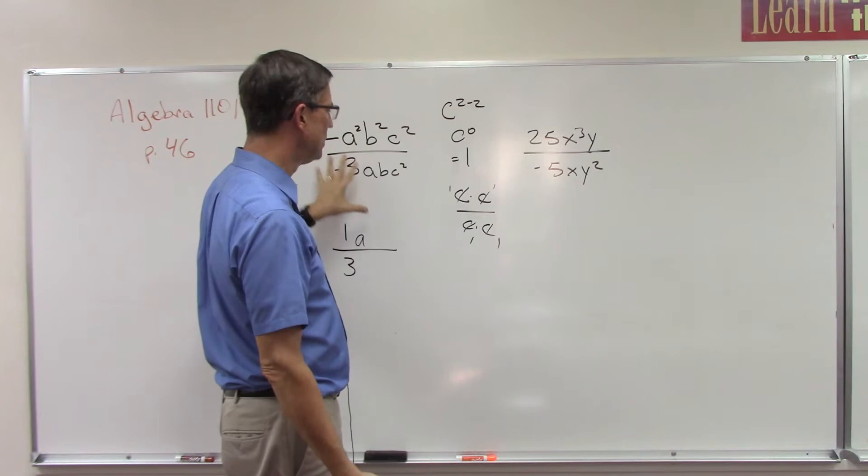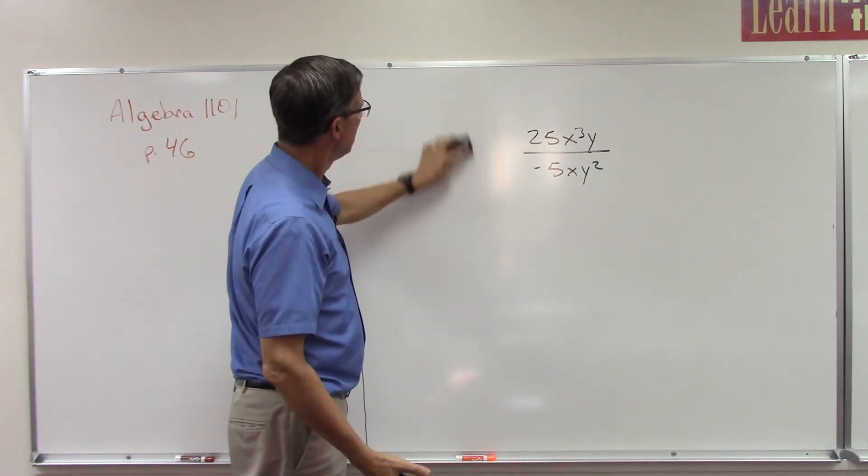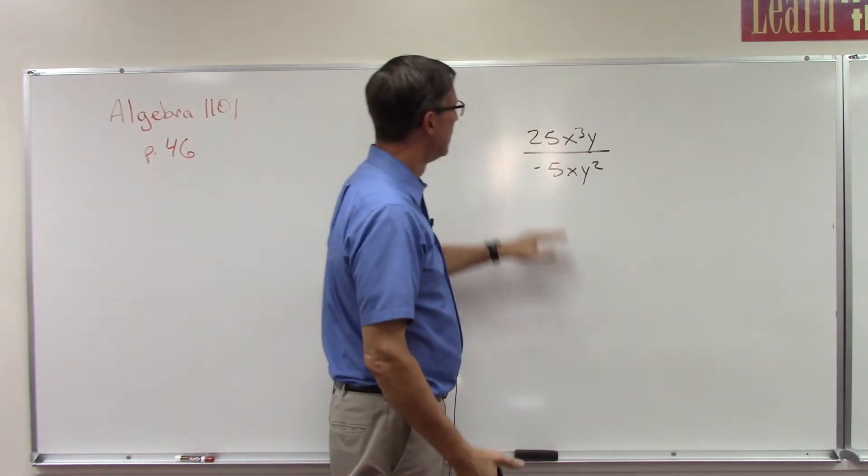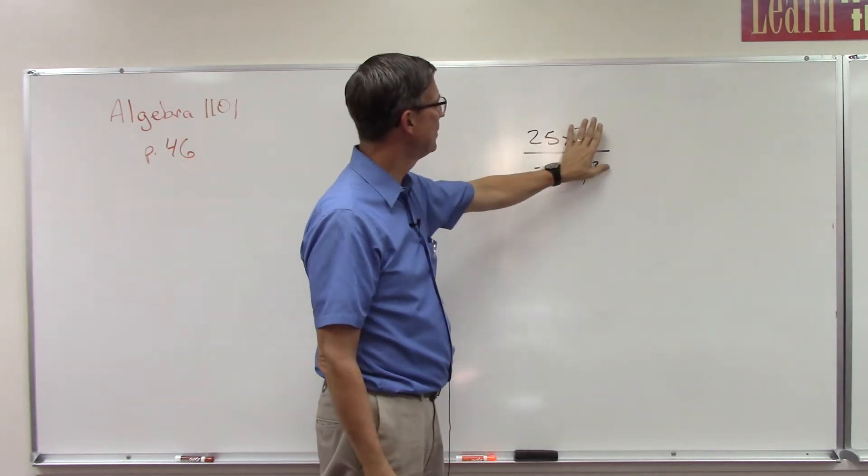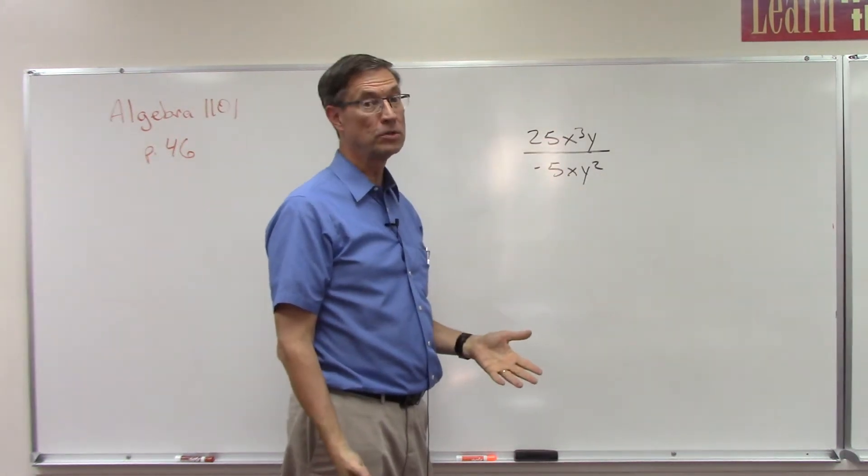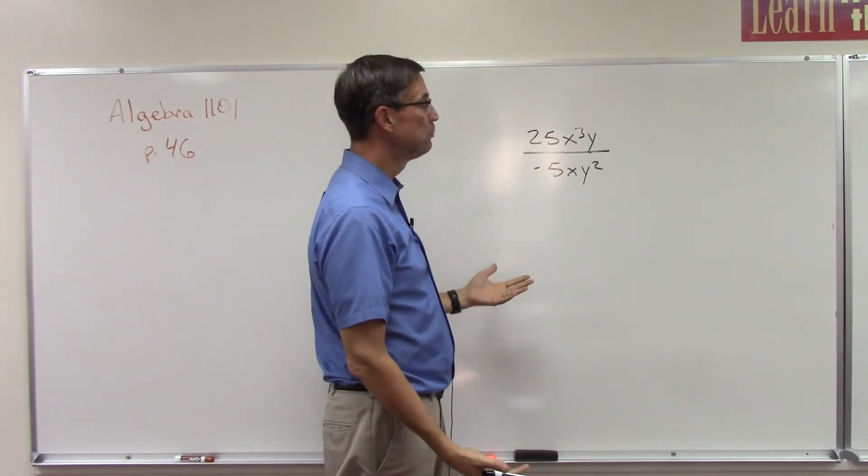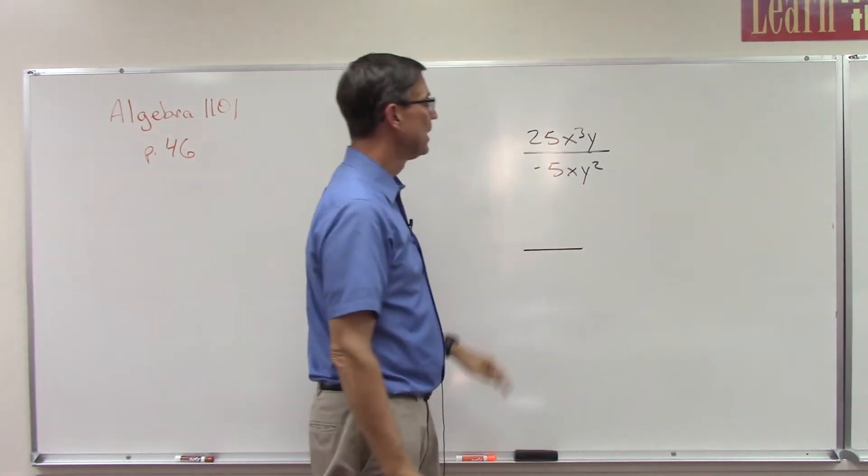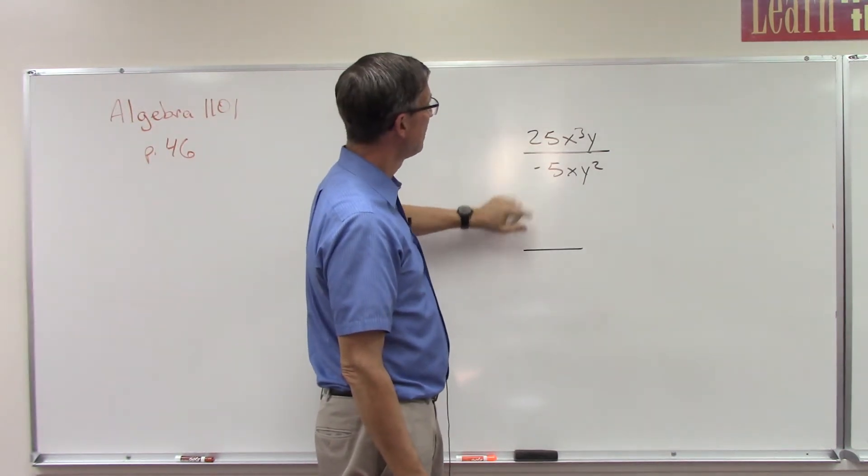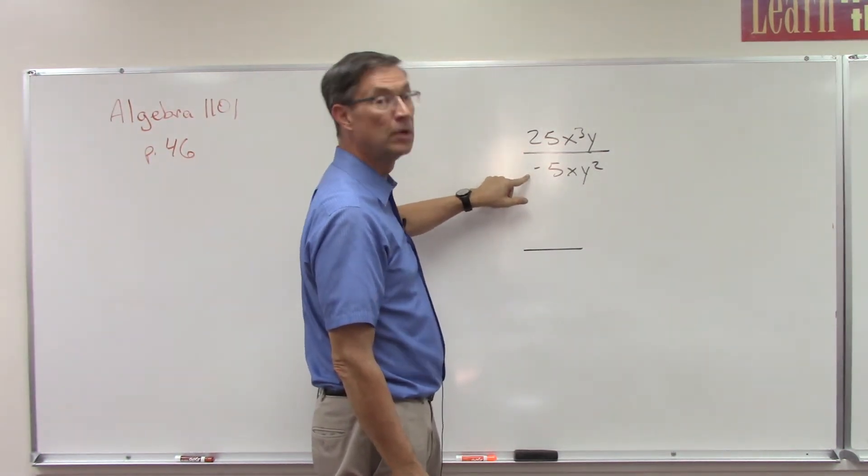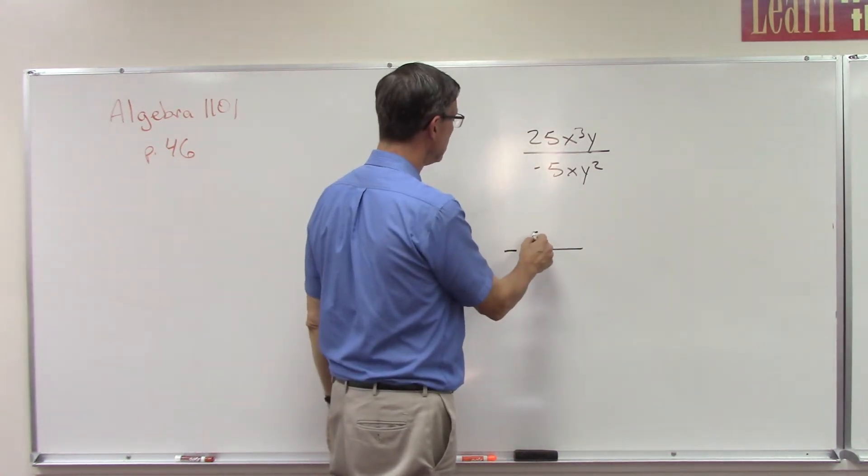Now let's look at this one here. We have 25 on the top, negative 5 on the bottom. If that was a fraction, 25 divided by 5 would give you a number - that goes on the top. 25 divided by 5 - because it's a positive divided by negative - the answer is going to be negative, so we put the negative out front and leave the 5 here on the top. Now let's subtract the exponents - we have x to the third on the top, x to the first on the bottom.